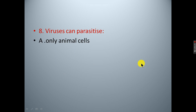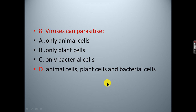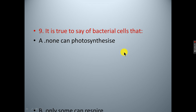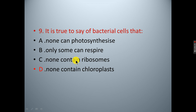A question about which cells viruses infect: A. only animal cells; B. only plant cells; C. only bacterial cells; D. animal cells, plant cells, and bacterial cells. Another question about bacteria characteristics: A. none can photosynthesize; B. only some can respire; C. none contain ribosomes; D. none contain chloroplasts. The correct answer is D.